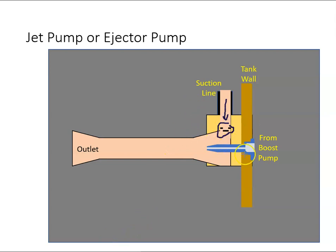So what happens is the fuel comes in, we get a low pressure point here. That low pressure sucks the fuel in through the suction line and that fuel all goes out through the outlet.